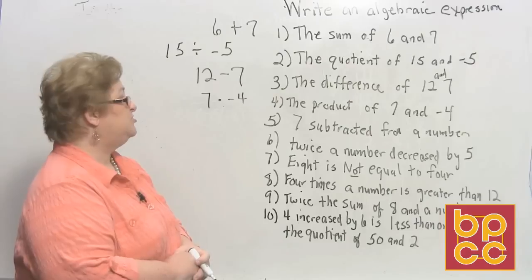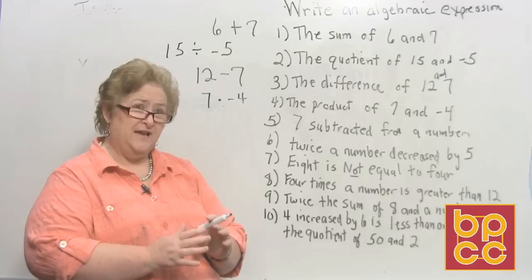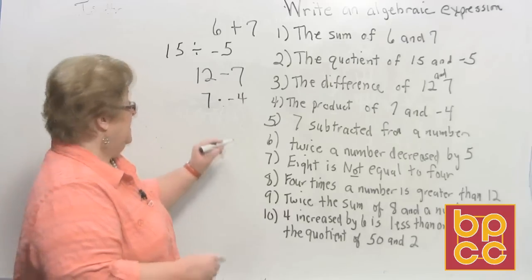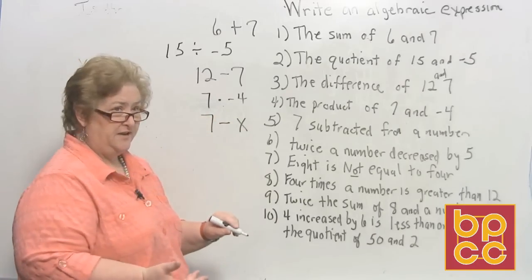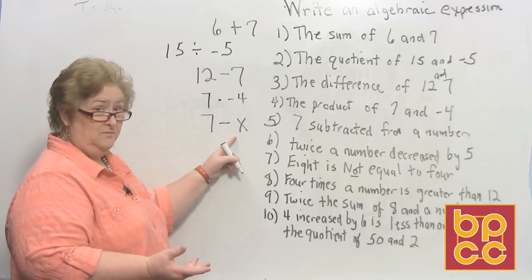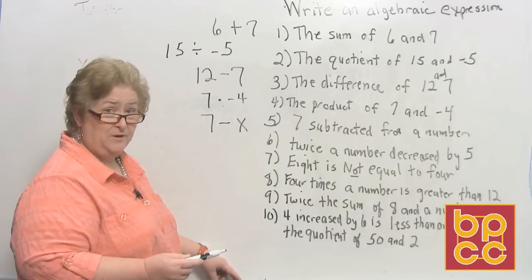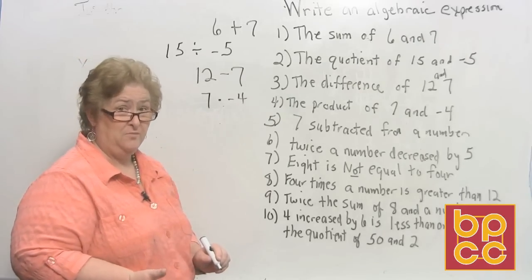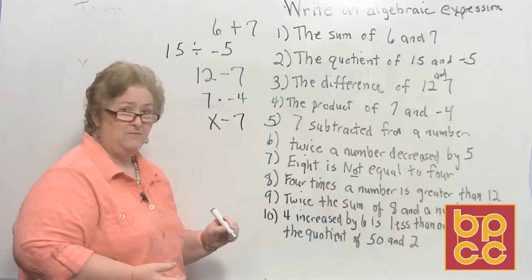Let's look at number 5: 7 subtracted from a number. This is the one that really messes people up because you're used to writing in the same order that you read. If you write 7 minus x, that says a number is being subtracted from 7 — that's incorrect. If 7 is being subtracted from a number, you need the number first. So the correct expression is x minus 7.